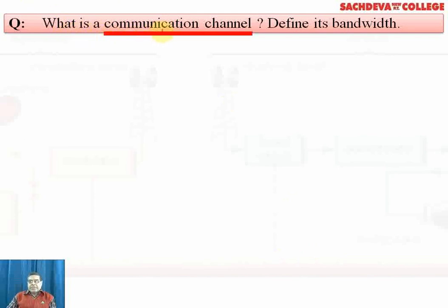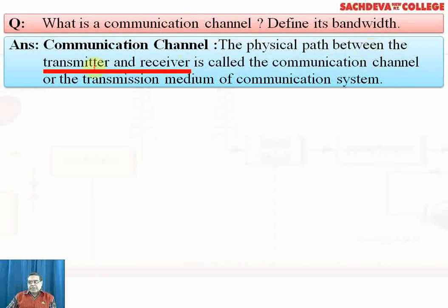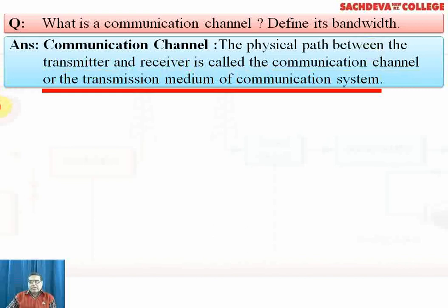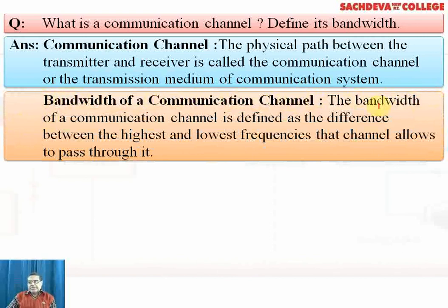The communication channel is a physical path between the transmitter and receiver — a medium between the two, called the communication channel or transmission medium of the communication system. The bandwidth of the communication channel is defined as the difference between the highest and the lowest frequencies.